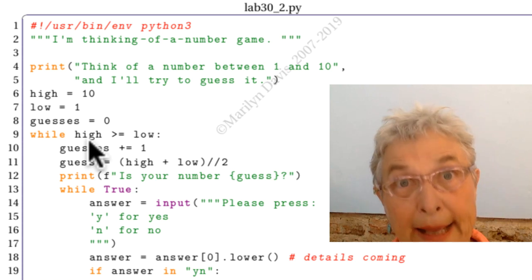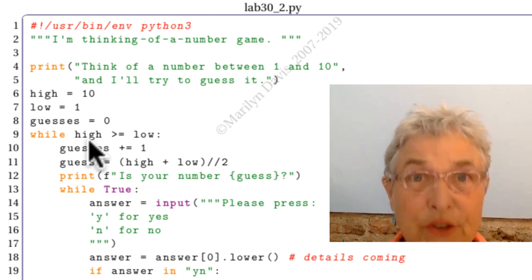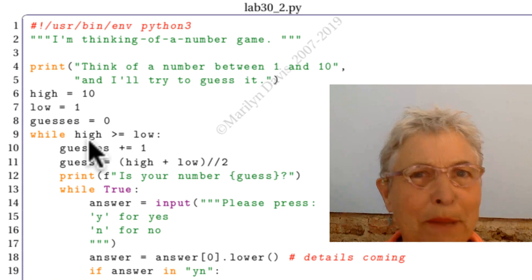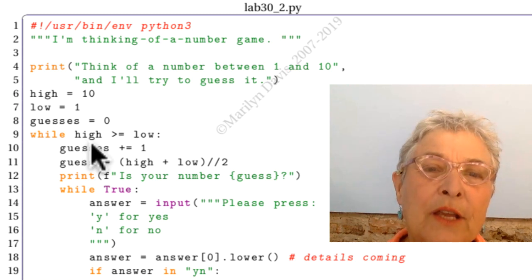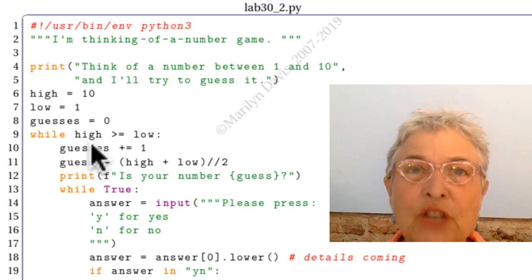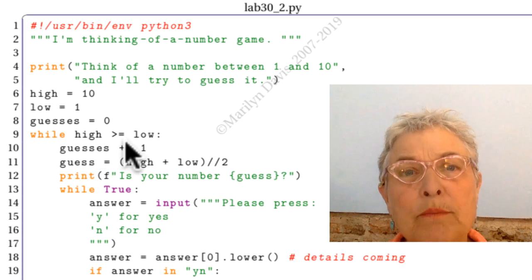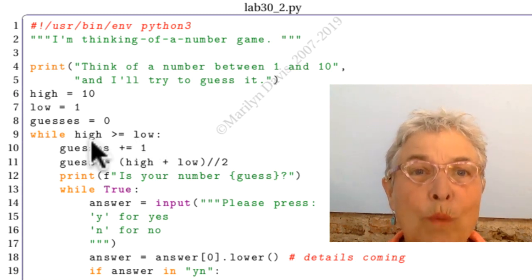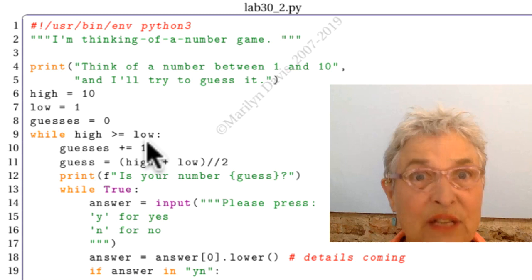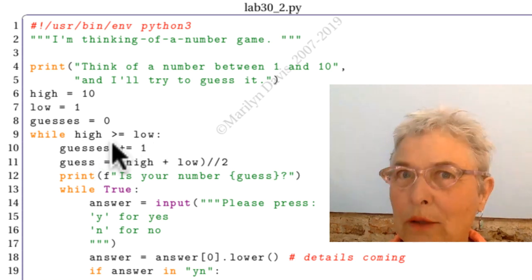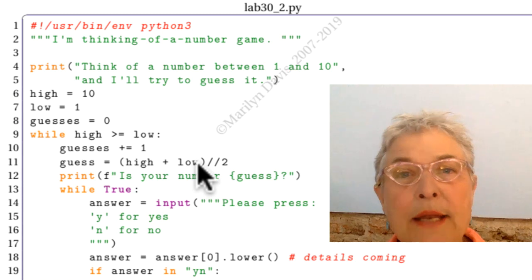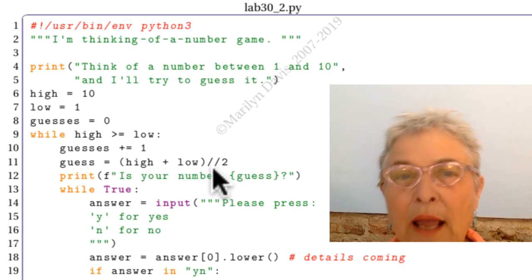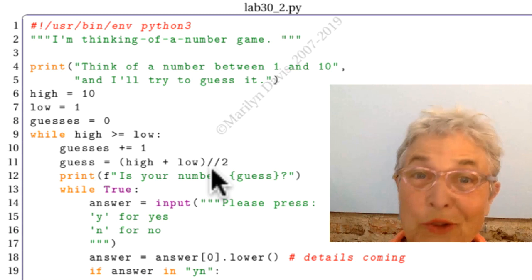This line of code, line 9, was suggested to me by a brilliant student - of which there are many, including you. When my playmate cheats and changes her number, then this becomes false. The low becomes higher than the high, so that's not good. That's why that's there rather than a while true. Every time through this loop, I add one to my guesses, and then I'm going to guess in the middle. Notice, here I am dividing with two division signs.